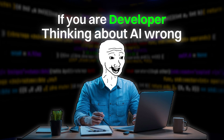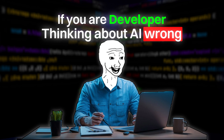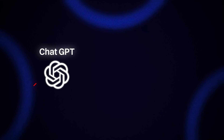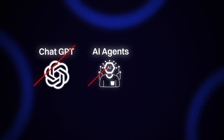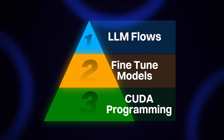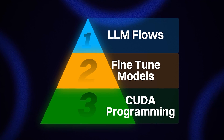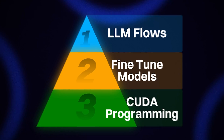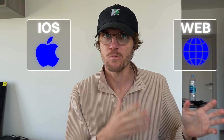Even if you're a developer, you might still be thinking about AI wrong. The reason is it's not just ChatGPT, it's not just agents, and it's not just your Cursor code editor helping you write code better. It's an entire platform with multiple levels of the stack that you can develop on, like other platforms such as iOS or web.